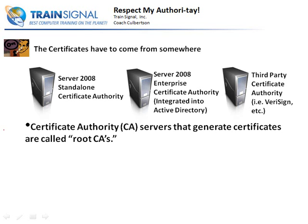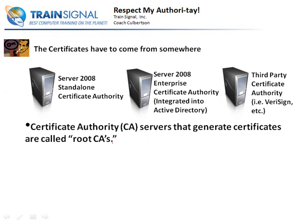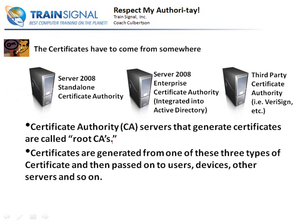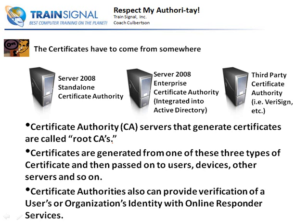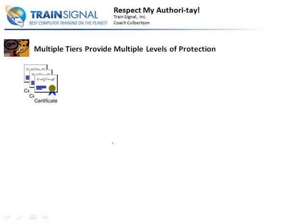A root CA generates certificates. In a very small network, you could use either the standalone or enterprise certificate authority by themselves to generate, hand out, and verify user identities and handle encryption. Certificates generated from any of these three types of CAs are then passed on to users, devices, and servers. These certificate authorities also provide authentication of a user or organization's identity using online responder services, which we'll talk about shortly when we discuss revocation lists.